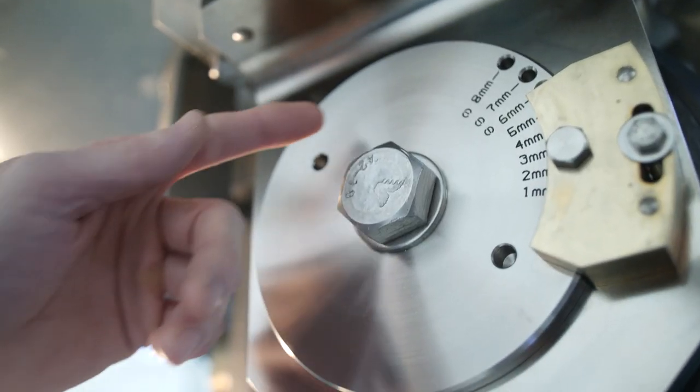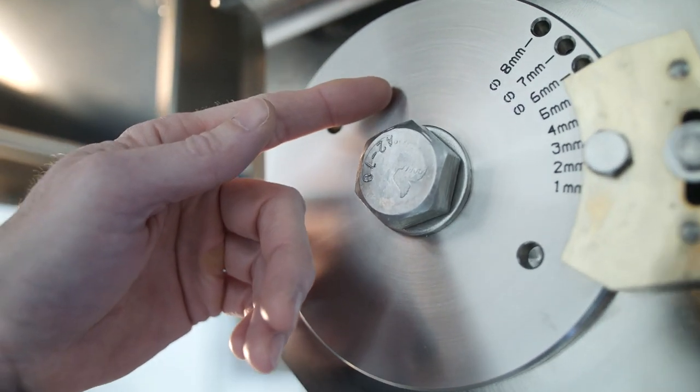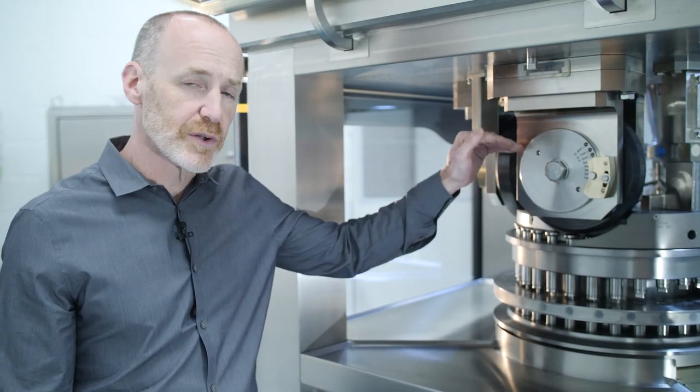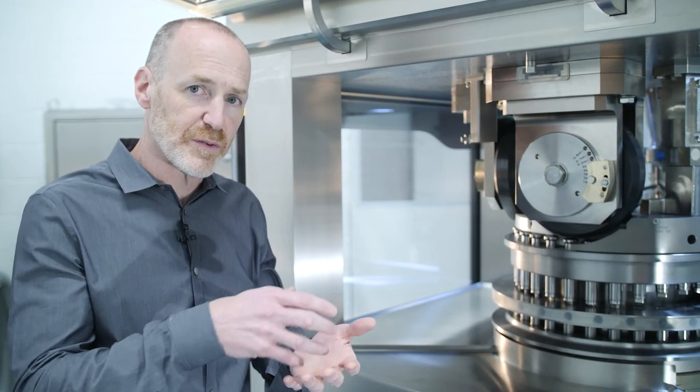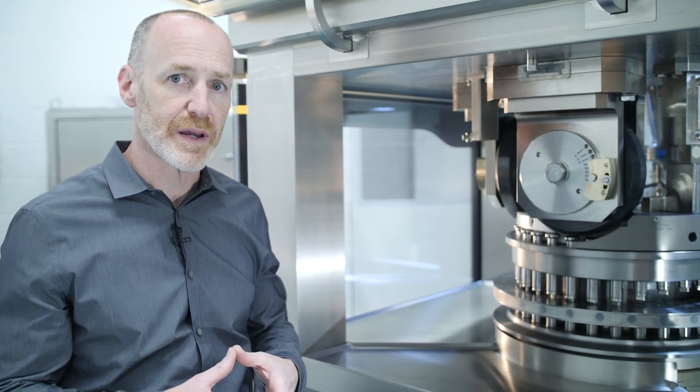The third would be to manipulate upper punch penetration, typically moving the upper punch a little bit higher in the die, thereby decreasing the speed at which the punch enters the die cavity itself.